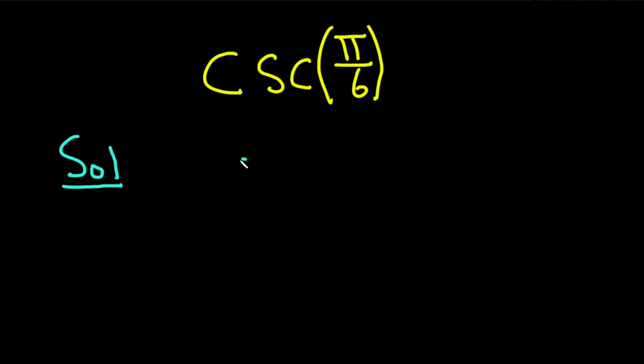The first step is to remember that the cosecant of x is equal to 1 over the sine of x.